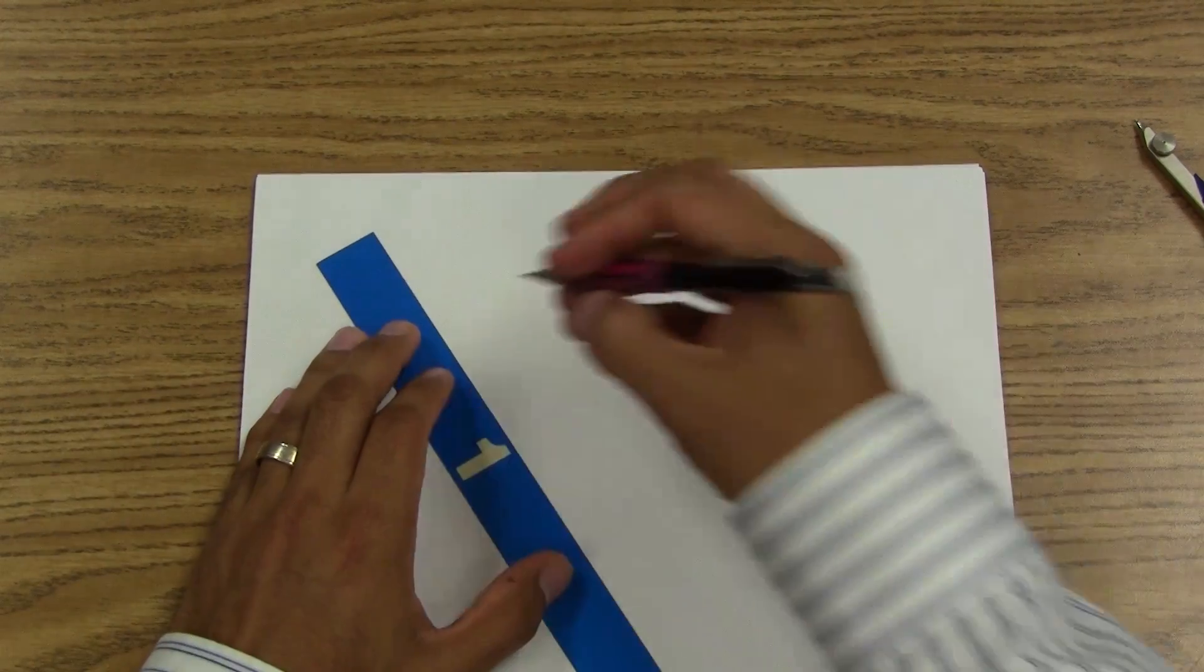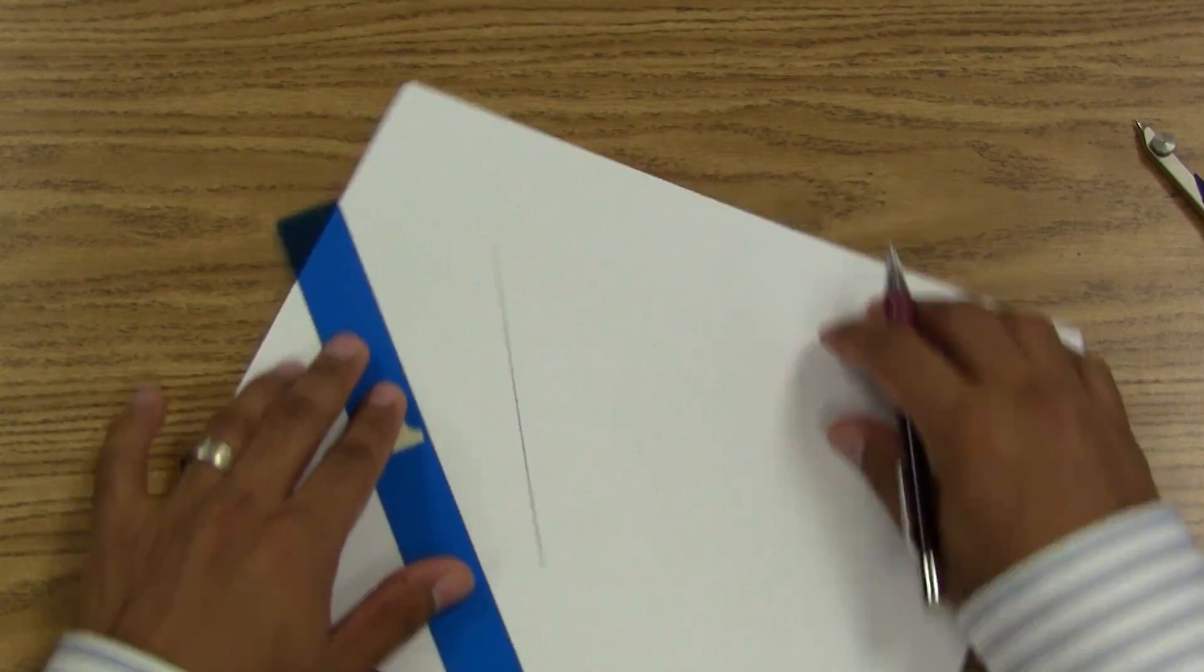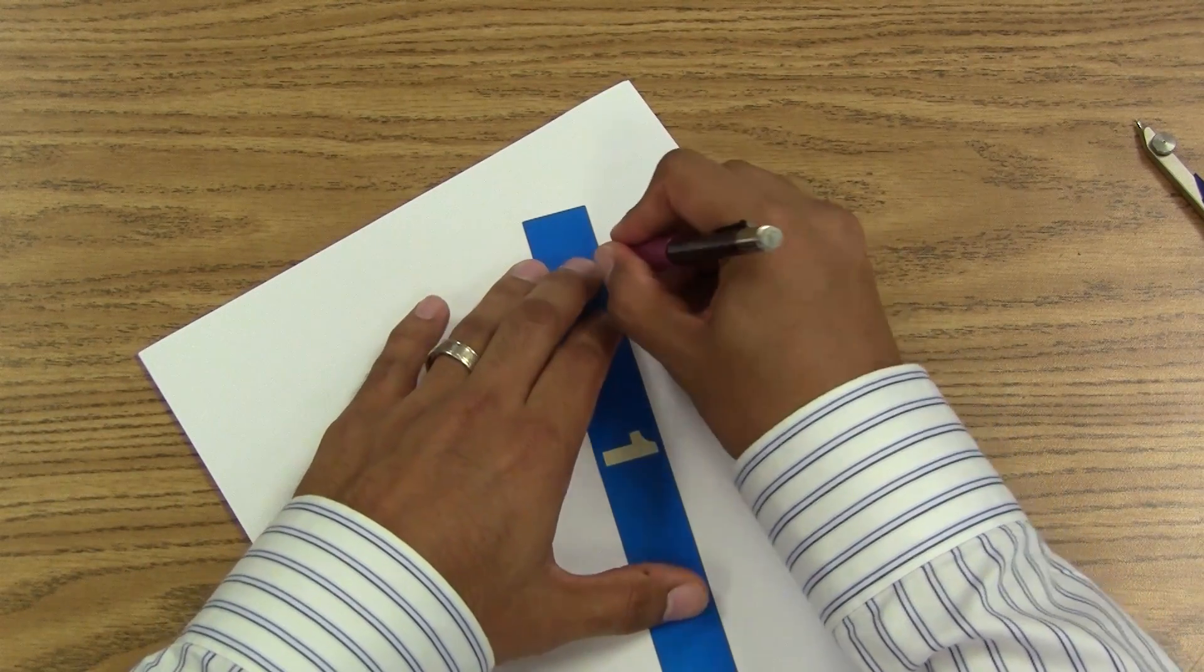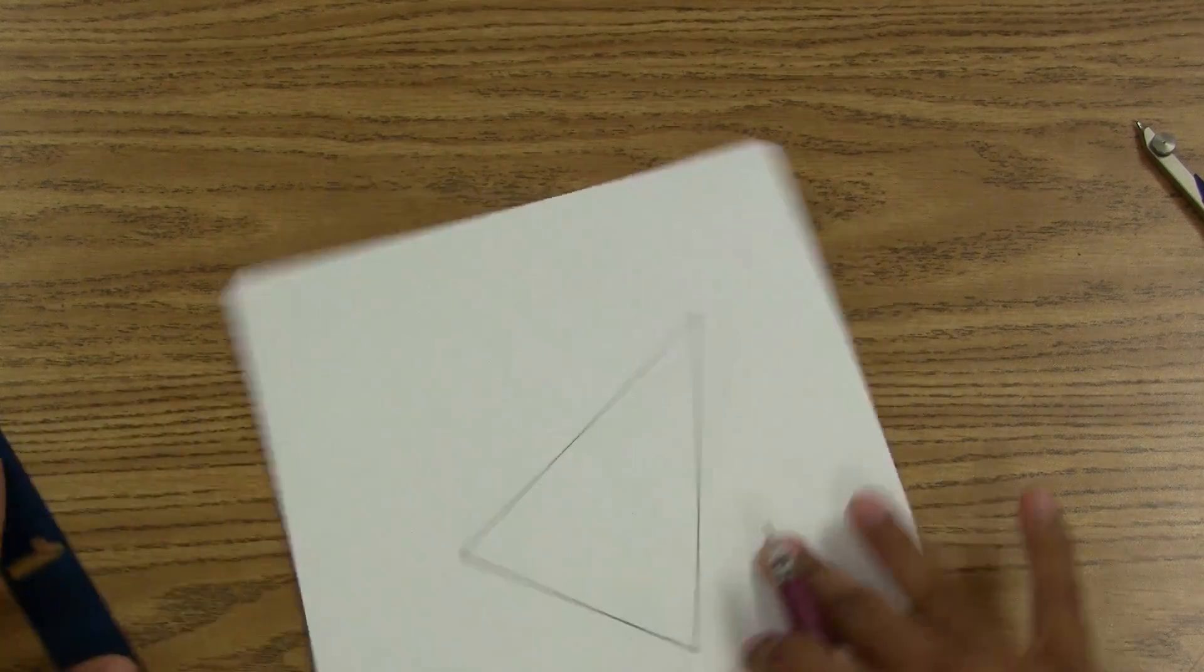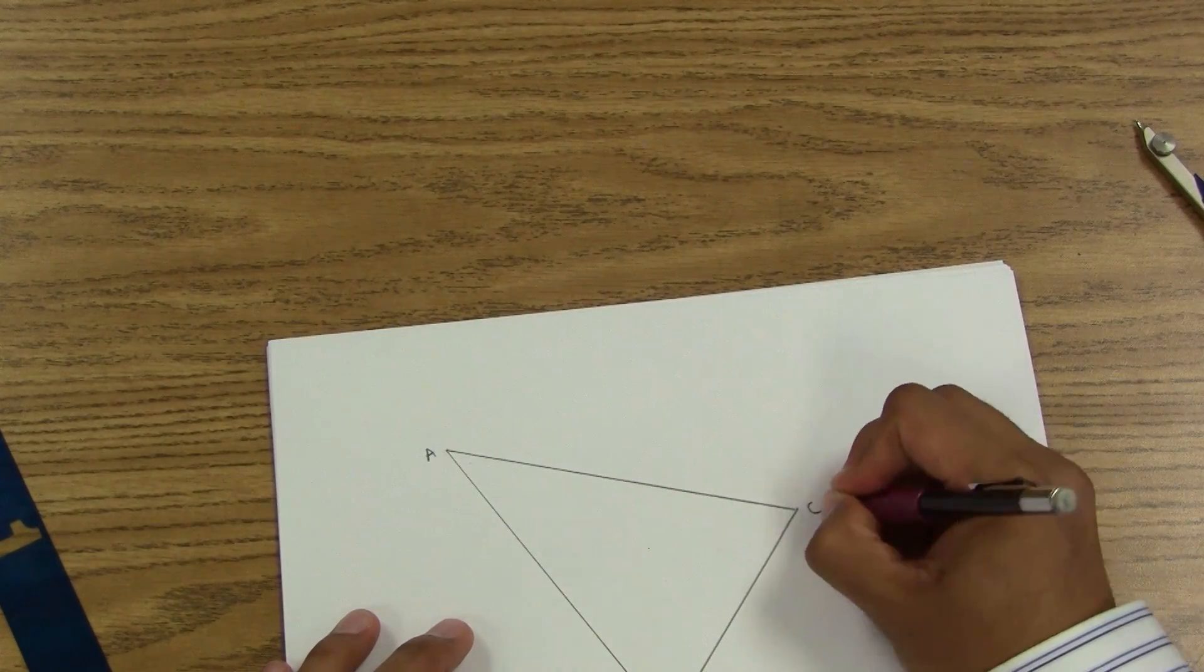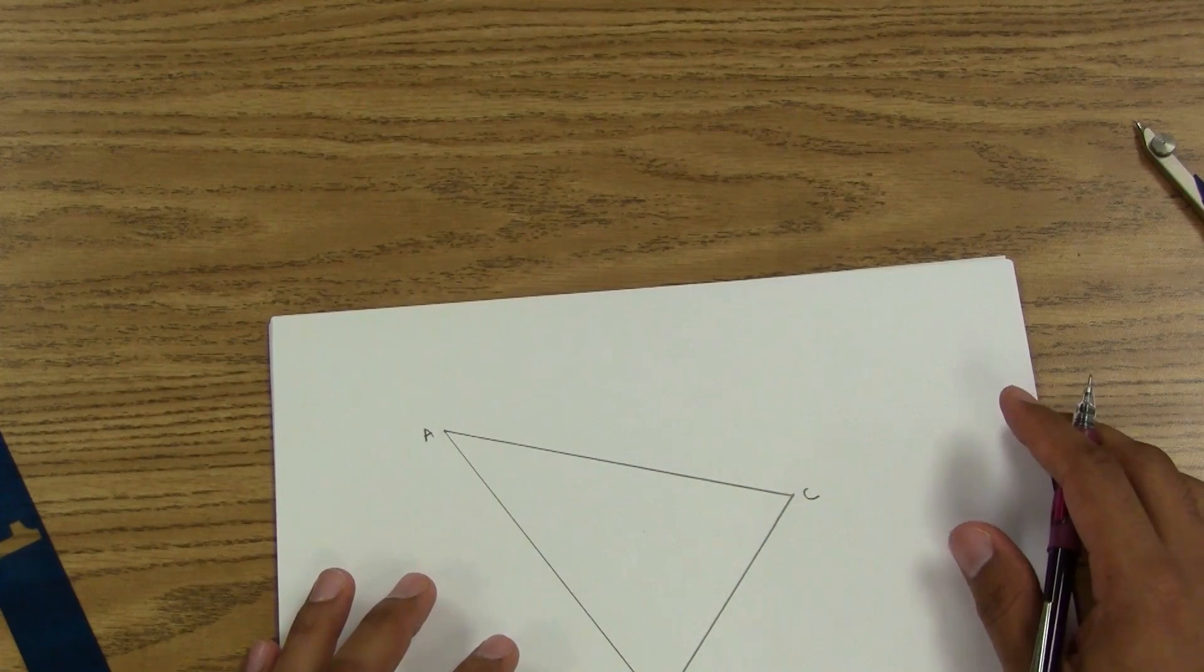Let's do another one. This one actually happens to be my fave. It's a random triangle, and once again labeled ABC. Now this time, what I want to do is I want to find three medians.